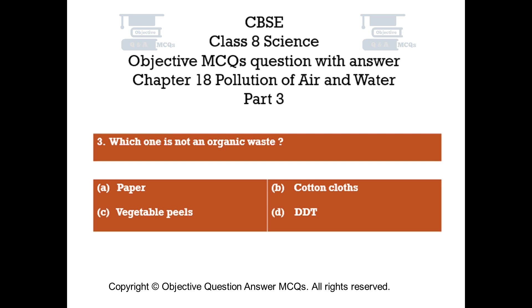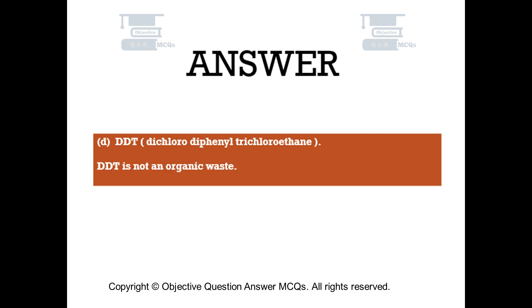Question number 3: Which one is not an organic waste? Option A: paper, Option B: cotton cloths, Option C: vegetable peels, Option D: DDT. The right answer is Option D: DDT. DDT is not an organic waste.